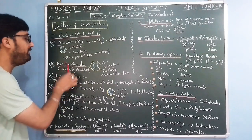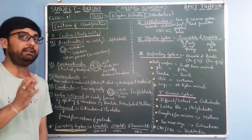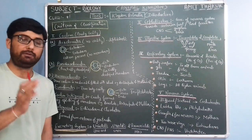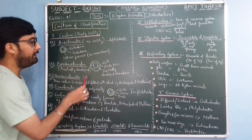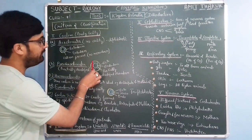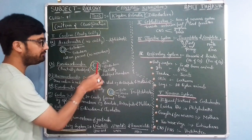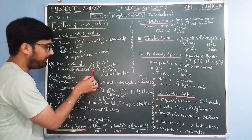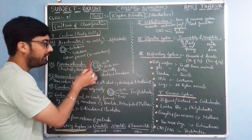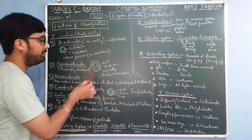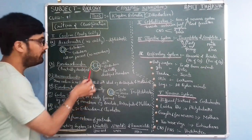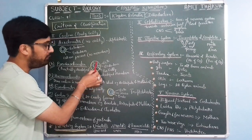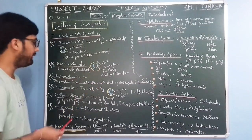Pseudocoelomates — pseudo means they are partially developed. They do have a partially developed body cavity. Here you can see this is the outer ectoderm, inner endoderm, and this mesoderm has started developing. So there is partial development of this middle mesodermal layer.